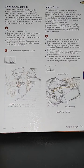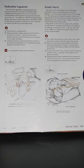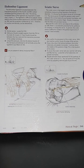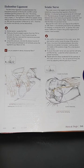Sometimes measuring three quarters of an inch in diameter, it is formed by the spinal nerves of L4 through S3. The nerve passes through the greater sciatic notch — between the ischial tuberosity and greater trochanter — and extends down the posterior thigh, distally branching into the tibial and peroneal nerves.